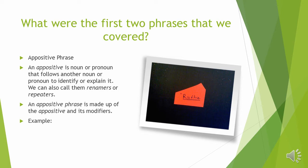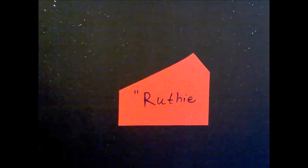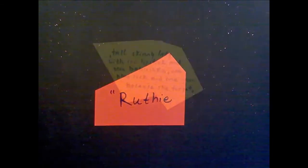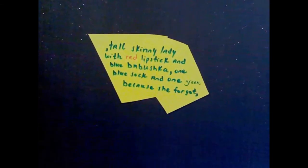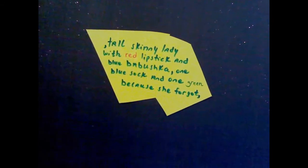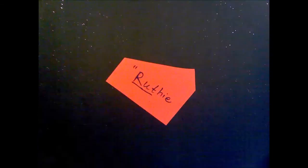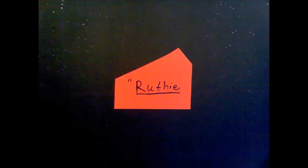Let's take a look at "Edna's Ruthie" by Sandra Cisneros. "Ruthie, tall skinny lady with red lipstick and blue babushka, one blue sock and one green because she forgot, is the only grown-up we know who likes to play." If I'm trying to find an appositive, I need the subject. Ruthie.